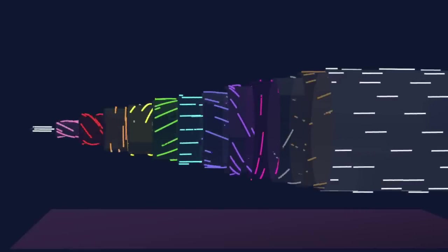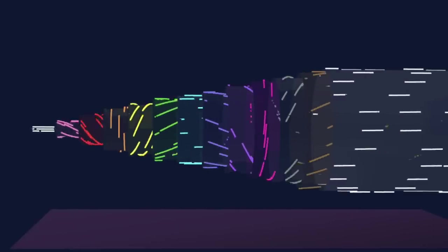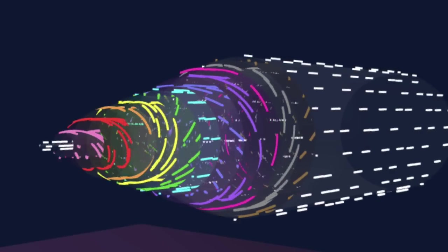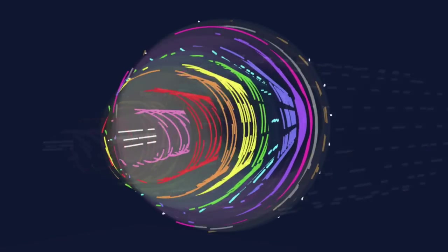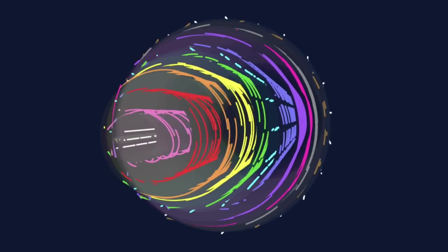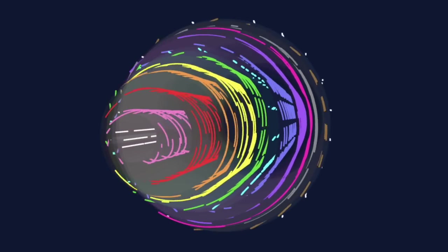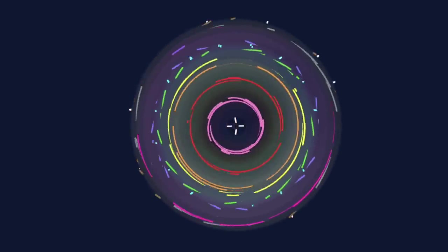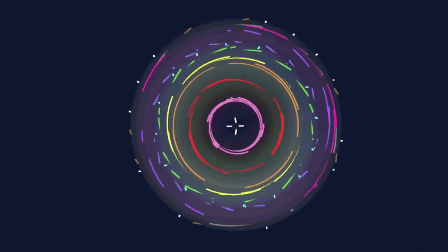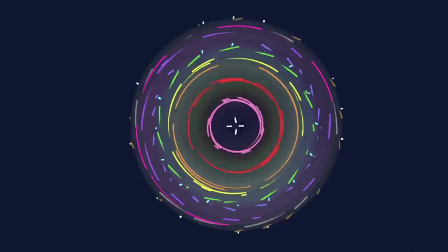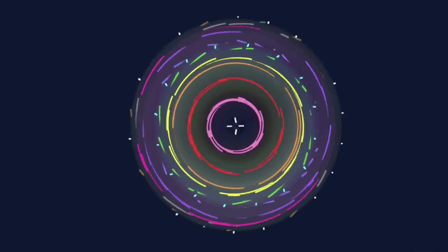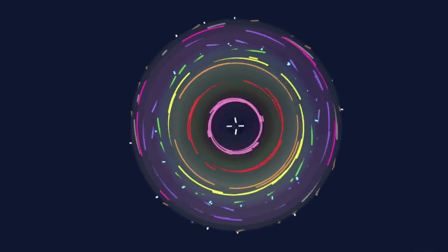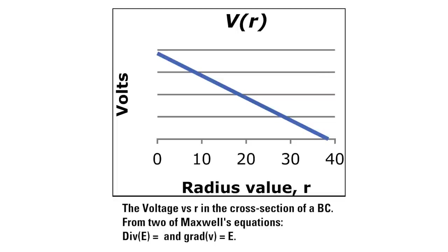In other words, we know what the charges are, where they are, we can solve for the electrical field that results. In turn, knowing the properties of that electric field allows us to find the voltage that will occur at every point within the Birkeland current's cross section as a function of the radius value of that point. It turns out that the maximum voltage occurs exactly at the center of the Birkeland current at r equals zero. The voltage plot is a simple linearly decreasing function of r. This voltage distribution is exactly what's needed to produce Marklund convection.